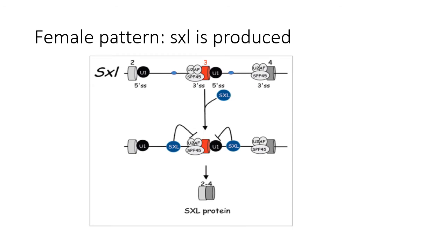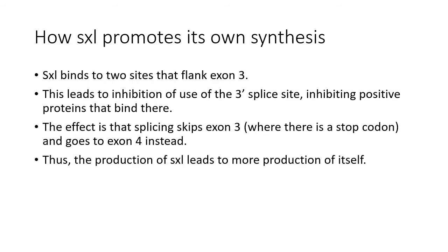This is mechanistically important because there's a stop codon in frame within exon 3 that causes the production of a shortened, inactive protein in males. The splicing repressor activity of sex lethal guarantees exon 3 will be skipped in females, whereas it will be included in males. We have the five prime splice site at the end of exon 2 ready to splice to exon 3, but there are binding sites for the sex lethal protein — intronic splicing repressor sites — that prevent the splicing system from recognizing the three prime splice site at the five prime end of exon 3. With the result that exon 3 is skipped and you get an active protein including exons 2 and 4. Sex lethal binds to two sites that flank the exon, inhibits use of the three prime splice site, and the effect is exon skipping.